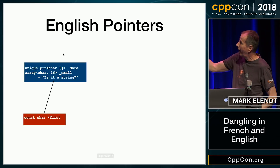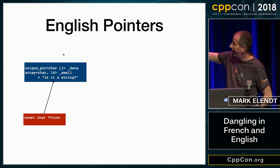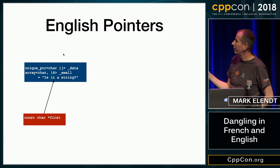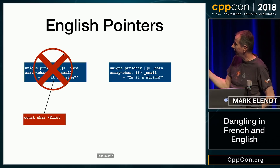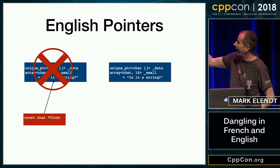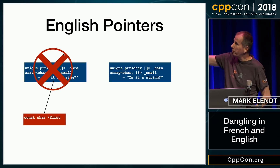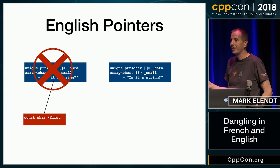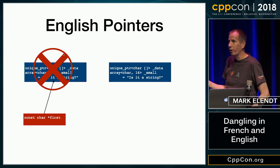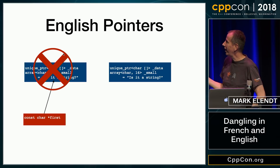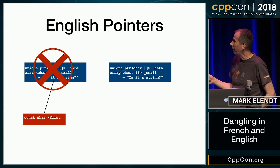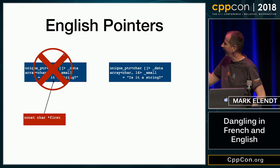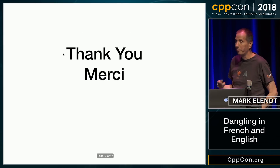But if you're pointing to an English string, it stores the data inside the string object itself as small buffer data. When you realloc the vector, 'first' is still pointing to that stale memory, and you end up with trash. So it's a really subtle bug — it took us a long time to figure out what was going on, because long strings work and short strings didn't. And that's the reason why. So, merci.